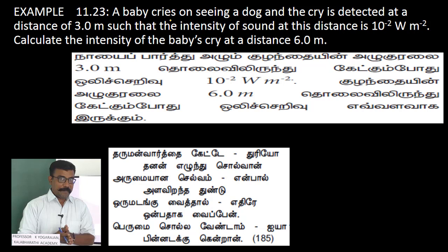A baby cries on seeing a dog and the cry is detected at a distance of 3 meters, such that the intensity of sound at this distance is 10 to the power of minus 2 watts per meter square. Calculate the intensity of the baby's cry at a distance of 6 centimeters.